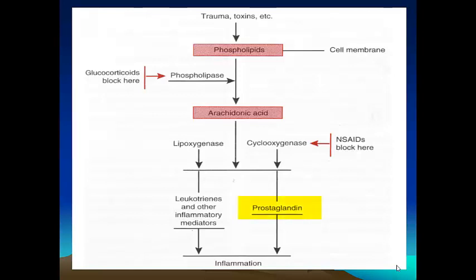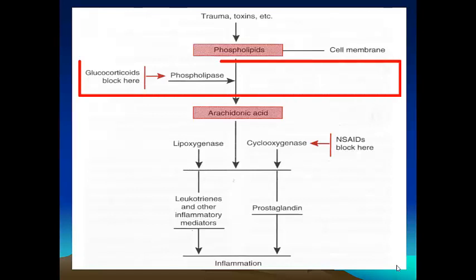The prostaglandins are just one type of mediator which non-steroidal anti-inflammatories suppress by inhibiting the enzyme cyclooxygenase. I'd also like to point out that when the cell membrane is injured, phospholipids enter the arachidonic acid cascade. Glucocorticoids are probably the best type of anti-inflammatory drugs because they inhibit phospholipase, blocking the production of arachidonic acid, and by doing so at such an early stage of the cascade they produce a profound effect on the inflammatory response.